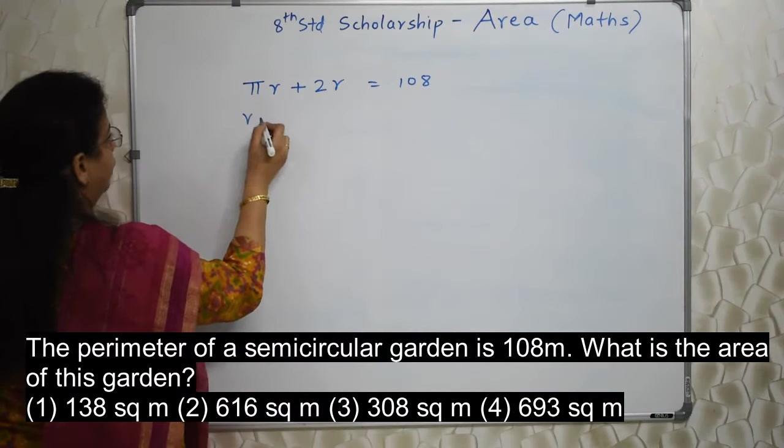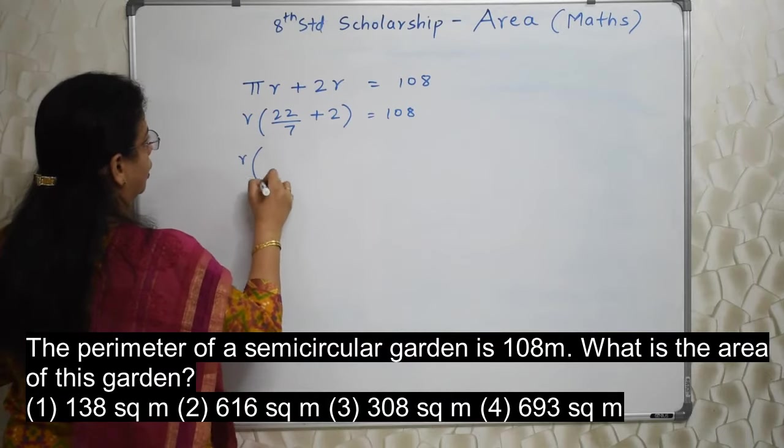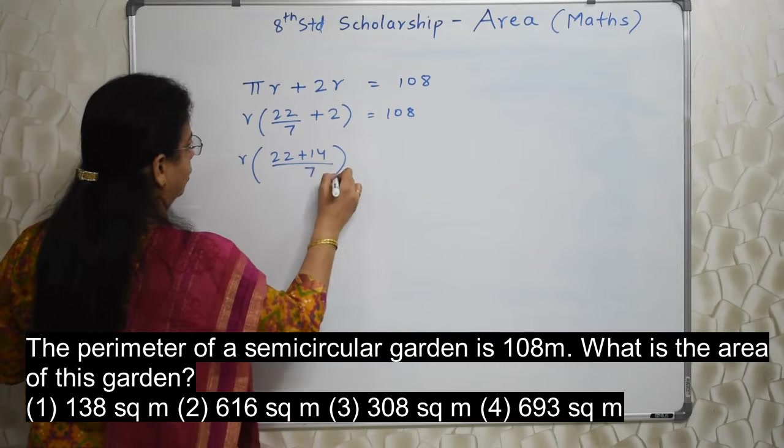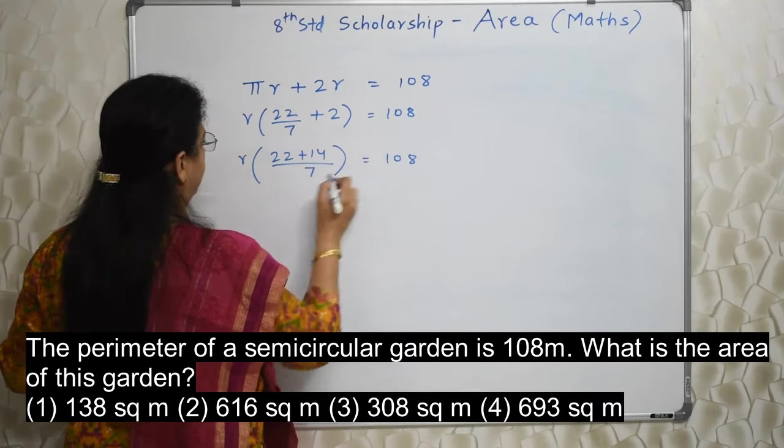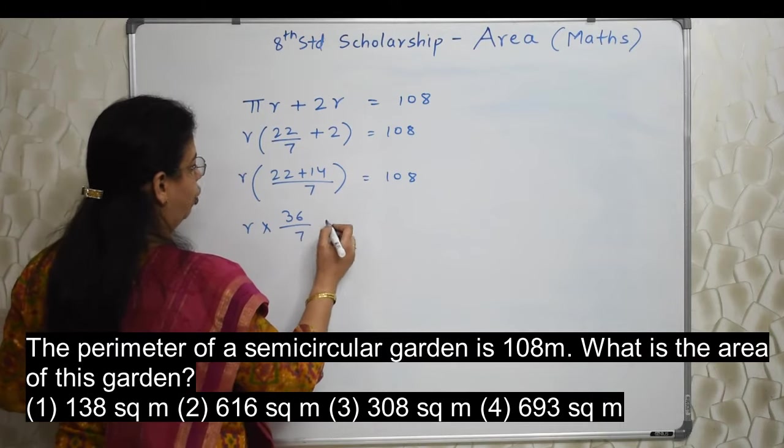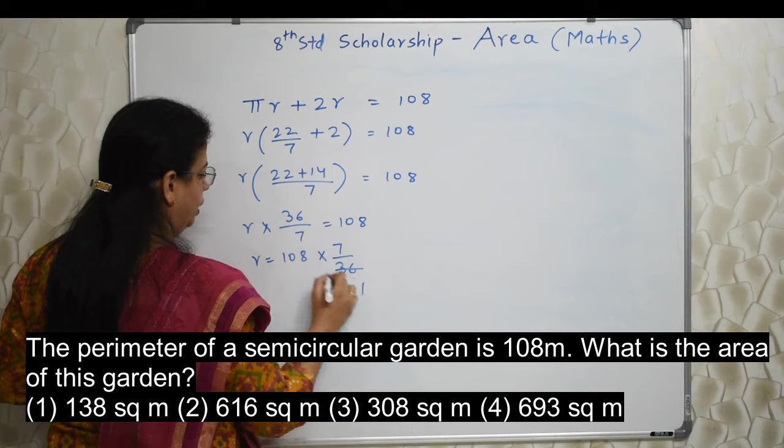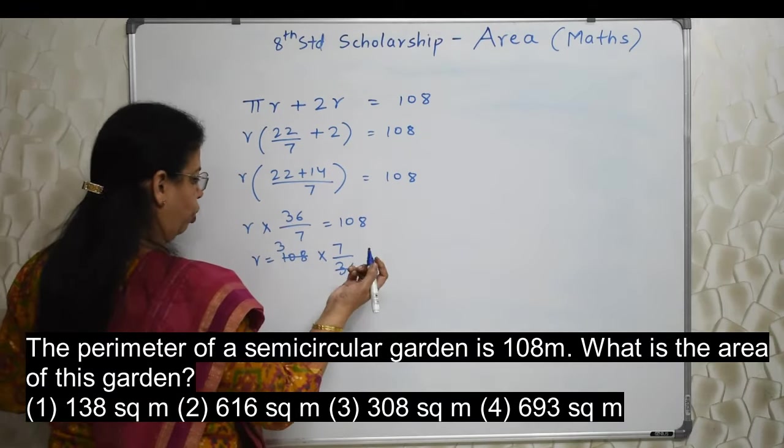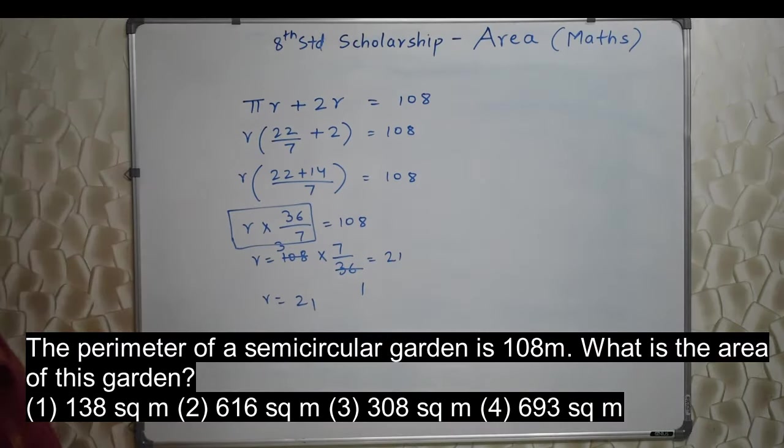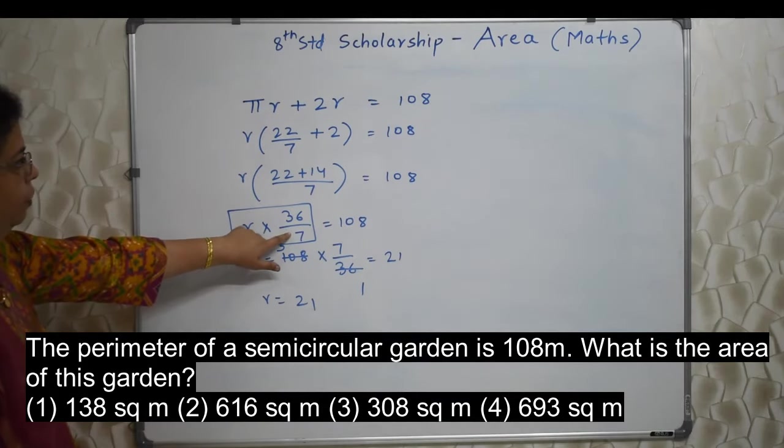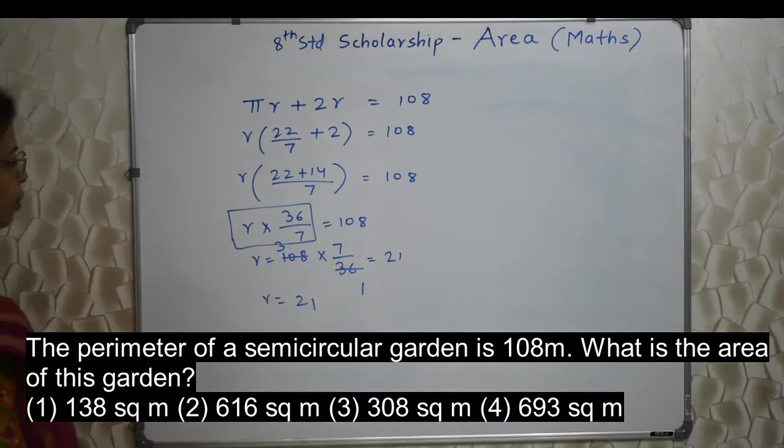Now here r we can remove common. 22 upon 7 plus 2 is equal to 108. So r is 22 plus 14 upon 7. LCM 7. So I have equated the denominators. r into 36 upon 7 is equal to 108. So r is equal to 108 into 7 upon 36, reciprocal. 1s are, 3s are. So r is equal to 21. Henceforth you can use this formula for a perimeter of a semicircular garden. Just remember this formula.